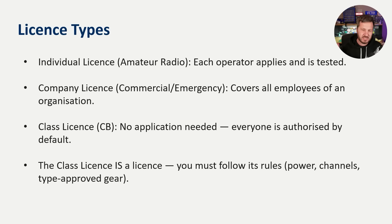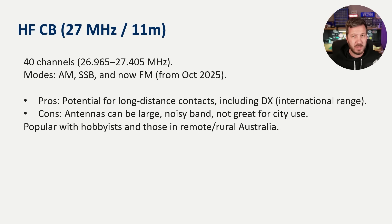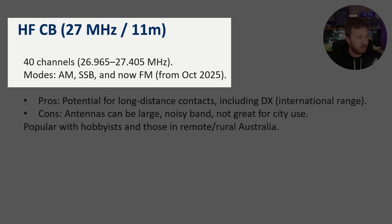Some people say that CB is license free — it technically isn't. The class license is the license; you just don't need to put in any paperwork. You're legally bound by its conditions. There are two CB bands available in Australia. The first is HF CB, or 27 megahertz, also known as 11 meters. This is 40 channels from 26.965 to 27.405 megahertz.